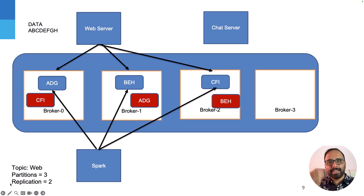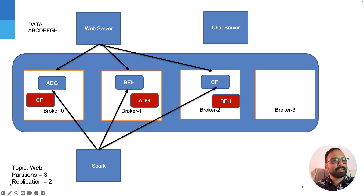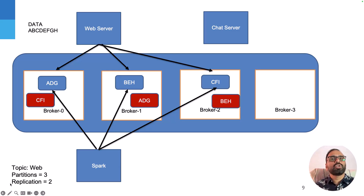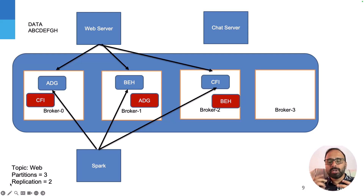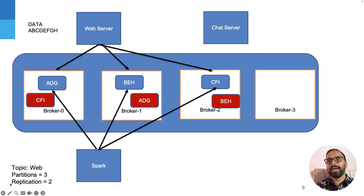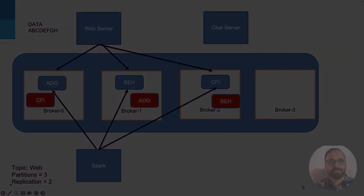So even if broker zero goes down, you can still read from broker one because there's a replica. When creating a topic you give it a name, define the number of partitions so it can span multiple brokers, and set a replication factor so each partition is replicated. Topics help isolate and queue messages. Partitions avoid the bottleneck of storing all data on a single broker. Replication enforces fault tolerance.